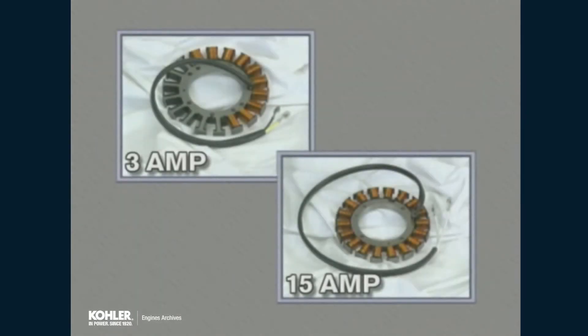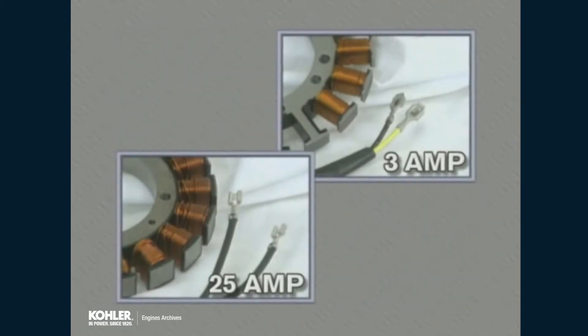Depending on the output of the system, stators are wound with different numbers of posts, varying numbers and size of conductor turns on each post, and different numbers of magnets. The greater the number and size of conductors and magnets, the greater the output capacity.